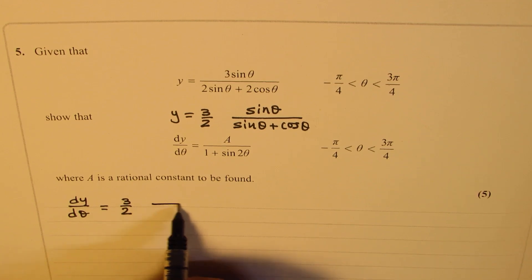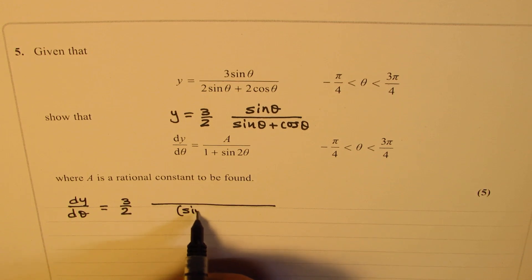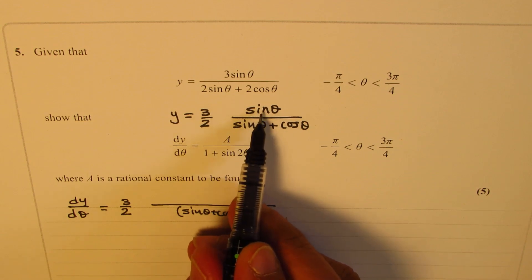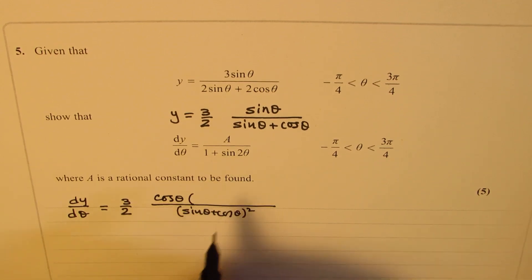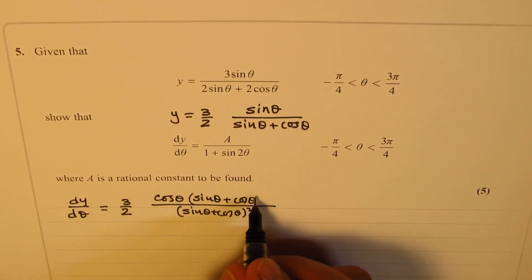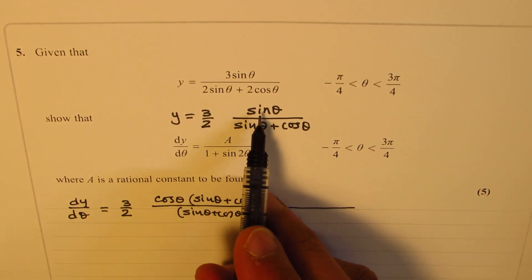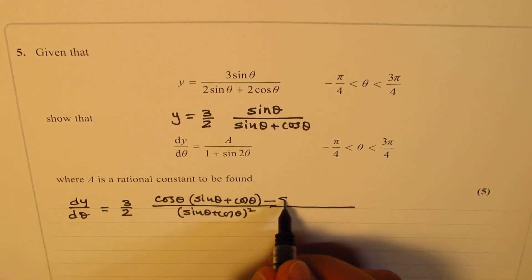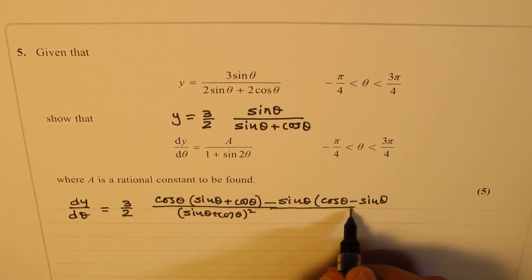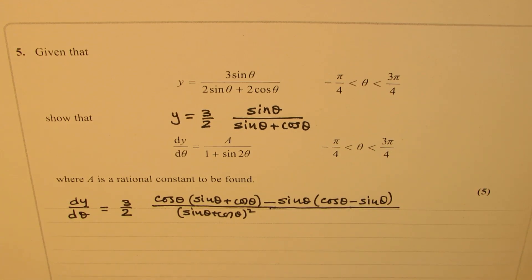And now, let's apply the quotient rule. So we get denominator square. So we have sine theta plus cos theta whole square. In the numerator, derivative of sine theta, which is cos theta, minus, and the second term will be sine theta times derivative of all this, which is cos theta minus sine theta. So we applied the quotient rule to get this derivative.